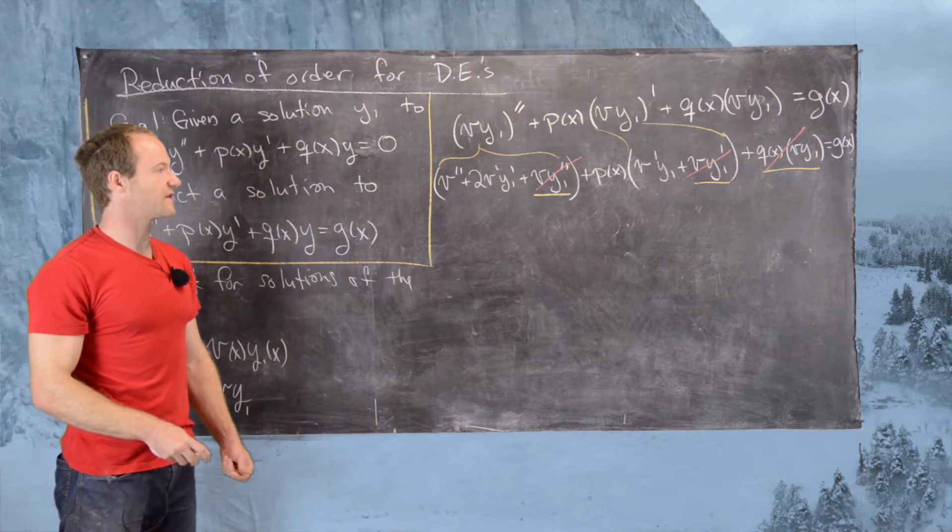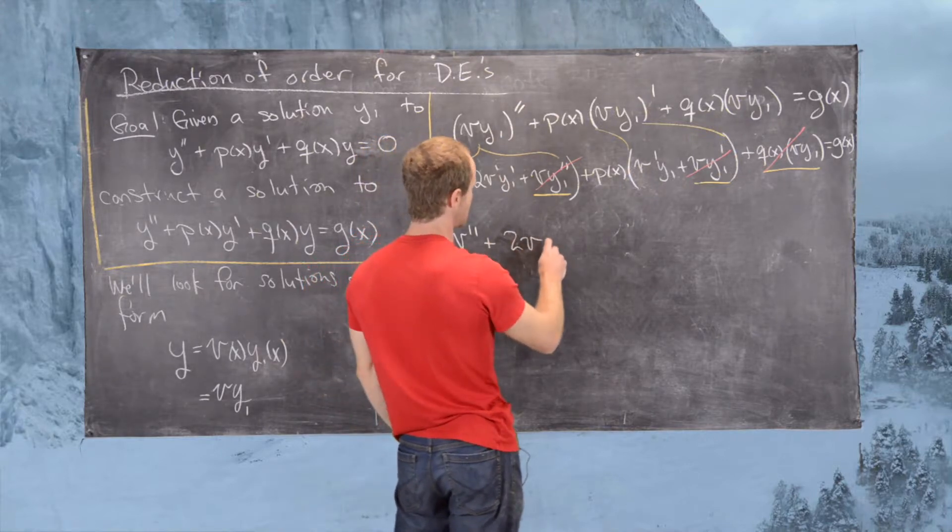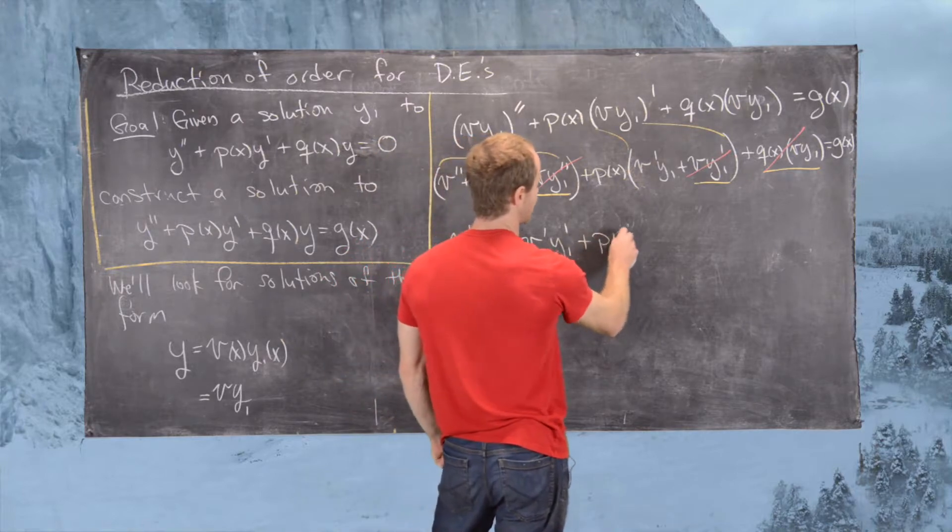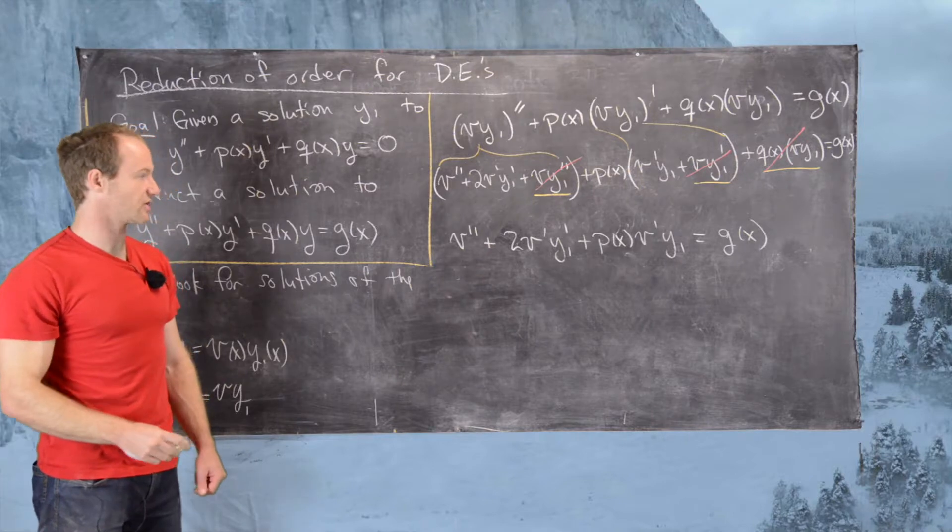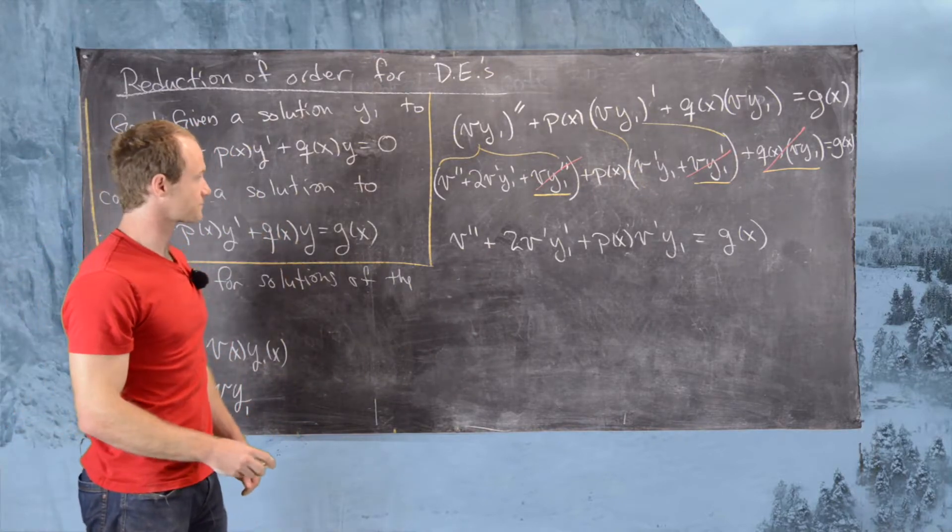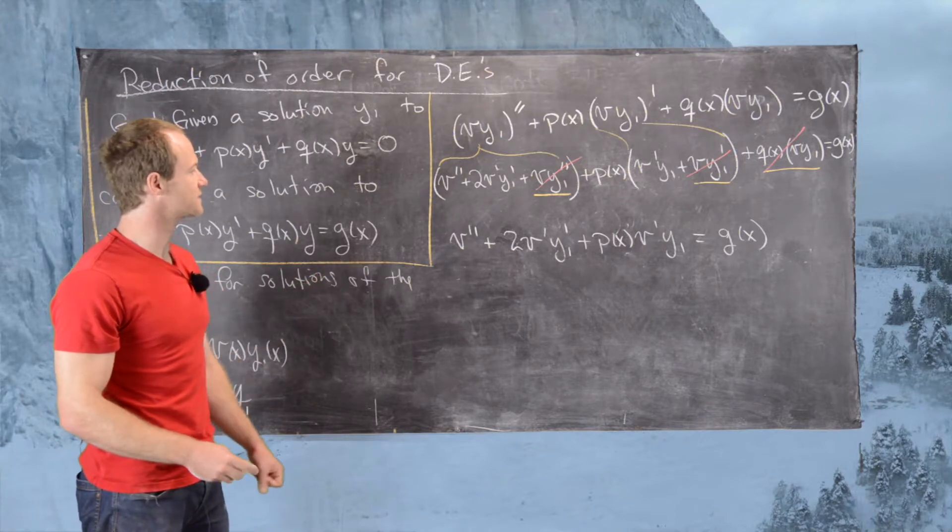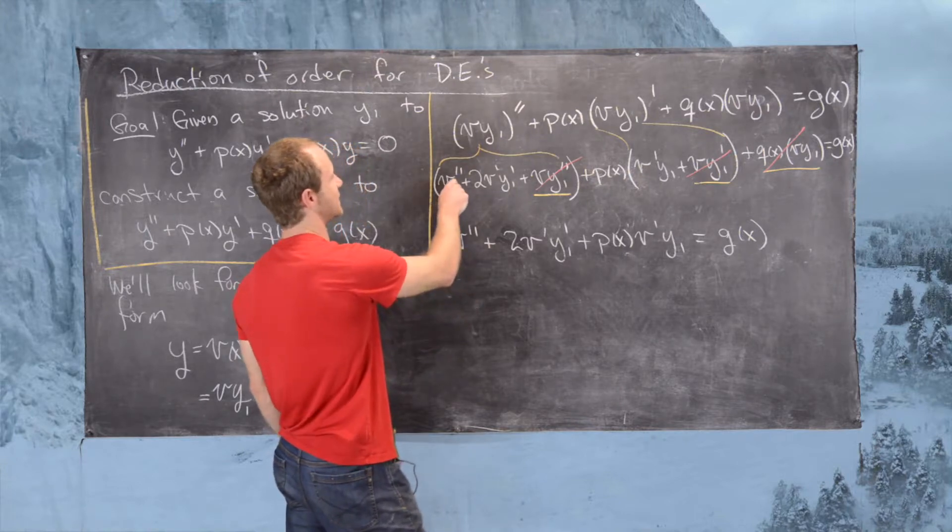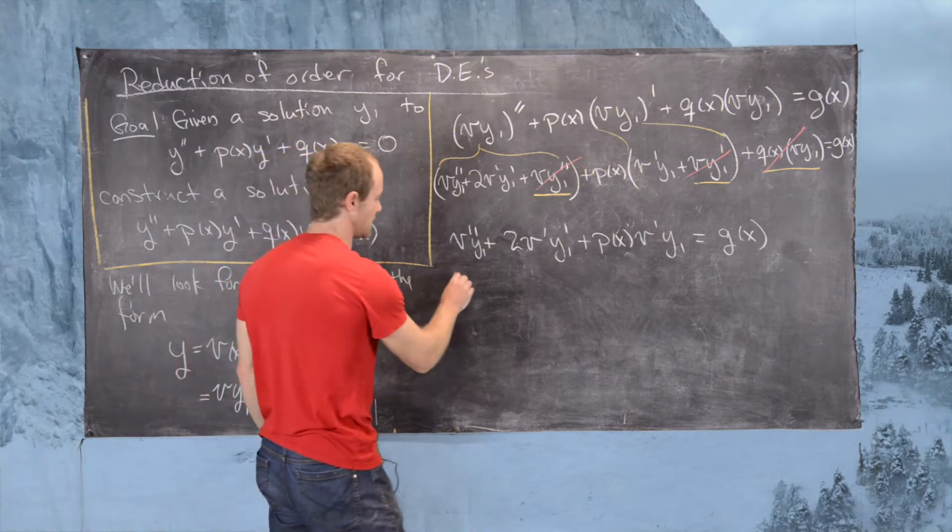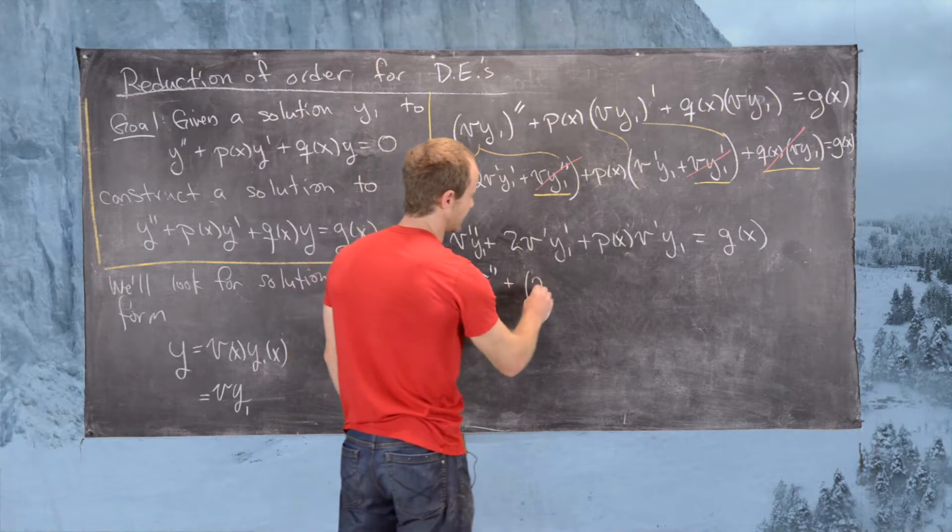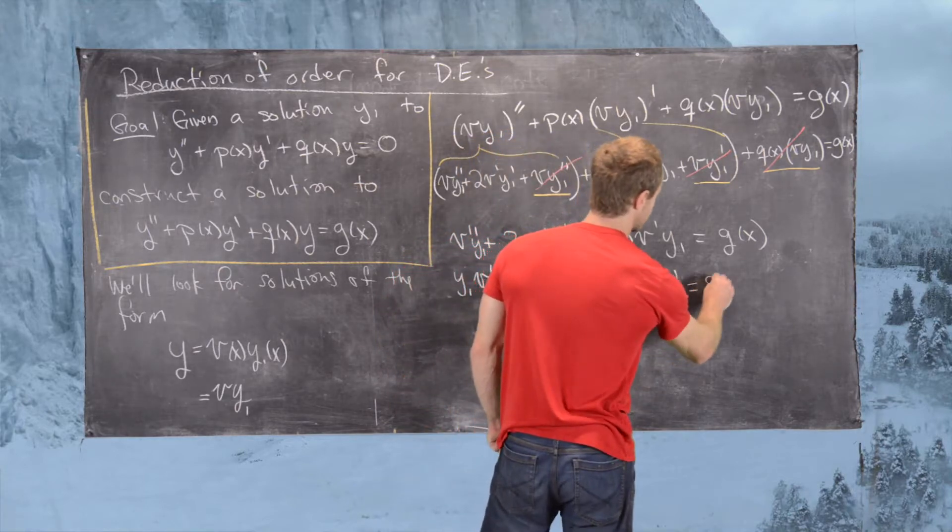That leaves us with the following differential equation: v'' + 2v'y1' + p(x)v'y1 = g(x). Now what I want to do is collect terms. Oh sorry, I left something off here. This should be times y1. So now we can collect terms as follows: y1v'' + (2y1' + p(x)y1)v' = g(x).